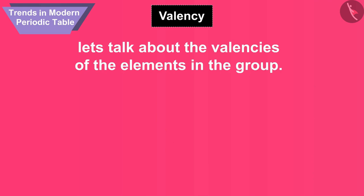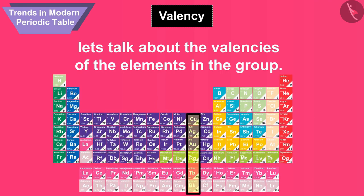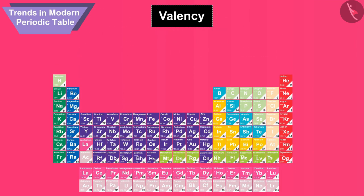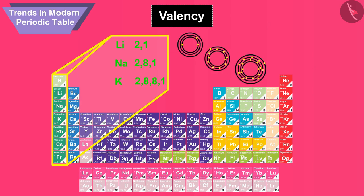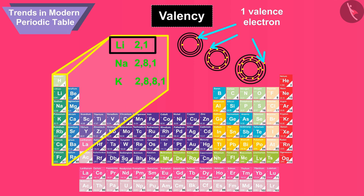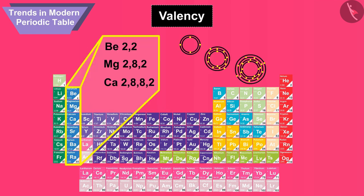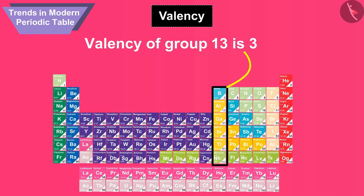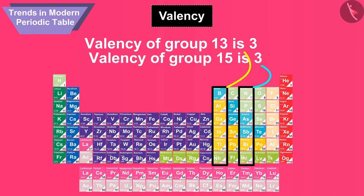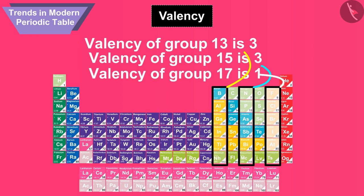Now let's talk about the valencies of the elements in the group. All the elements of a group of the periodic table have the same number of valence electrons. For example, all elements of group 1 like lithium, sodium, and potassium have one valence electron in each of their atoms, and therefore they have valency equal to 1. All elements of group 2 have two valence electrons and hence valency is 2. Valency of group 13 is 3, valency of group 15 is 3, and valency of group 17 is 1.